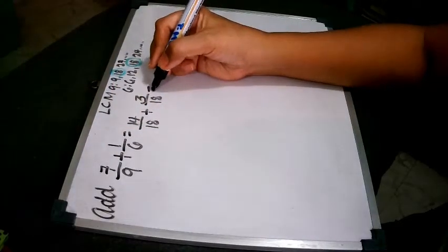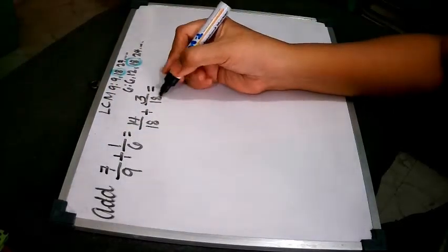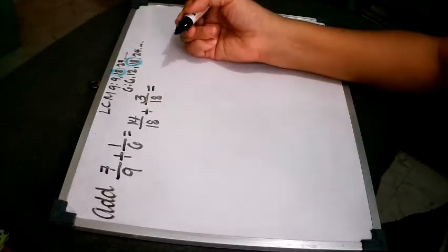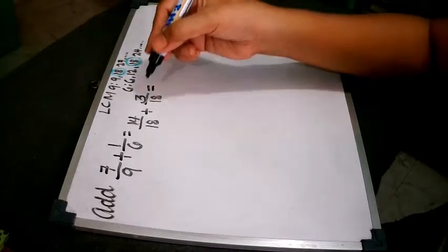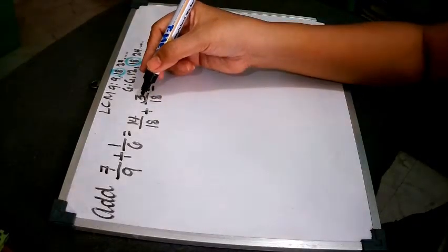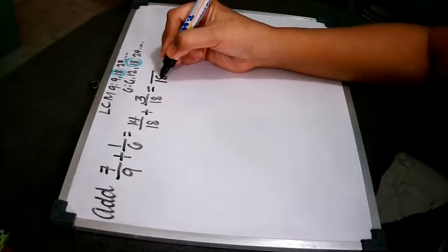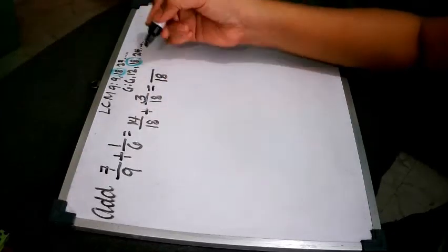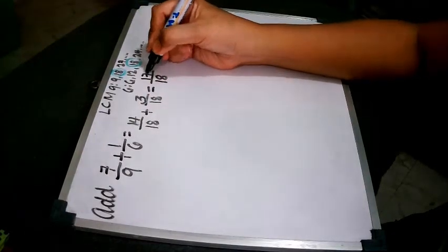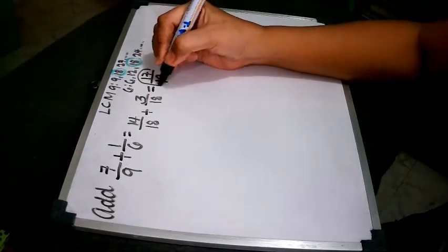So we can now add. Why? Because their denominators are already the same. So the rule says we just have to add the numerators and copy the denominator which is 18. So 14 plus 3 equals 17. So we have now the answer.